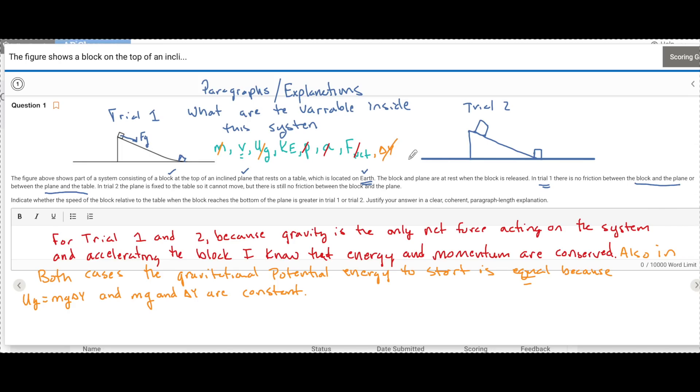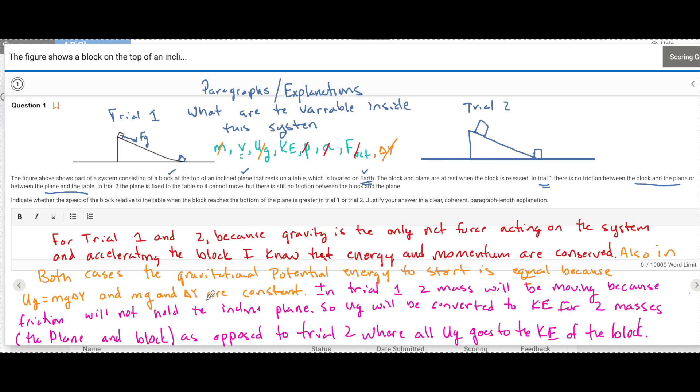Now I can start to look at each trial independently. In trial one, two masses will be moving because friction will not hold the inclined plane. When this thing gets going, the inclined plane is going to be pushed this way as the block moves this way. So there's going to be two speeds as opposed to in trial two where the potential energy goes all to the block.